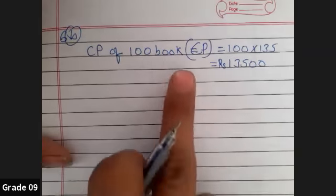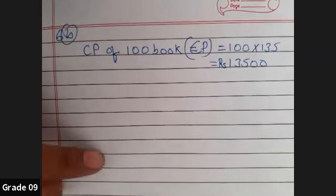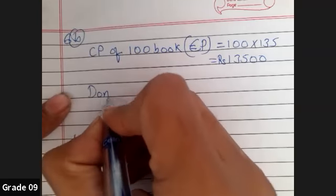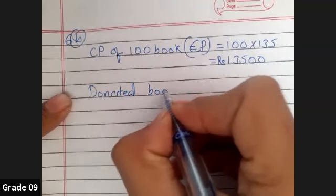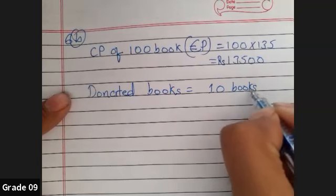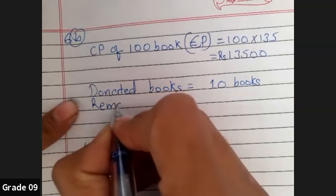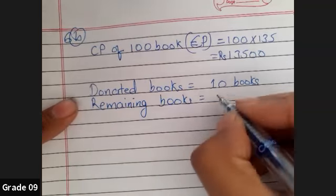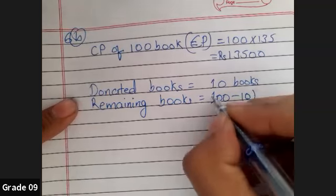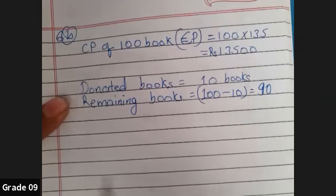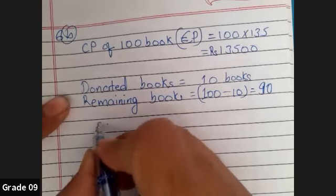But in the middle, before she goes for selling, she has donated 10 books. Donated books means she is not going to sell these books. So for selling, how many books remaining? You have to find remaining books. So 100 minus 10 is 90. 90 books is remaining. Now she is going to sell these books, so selling price of 90 books.